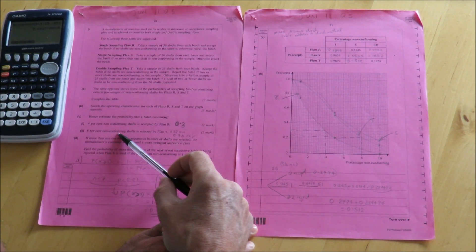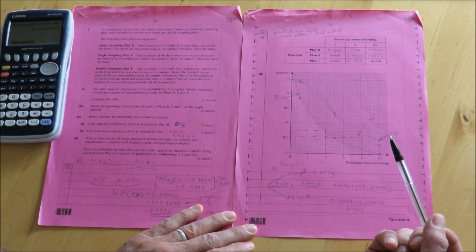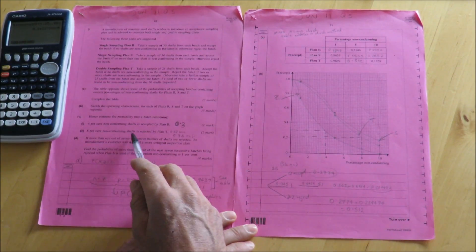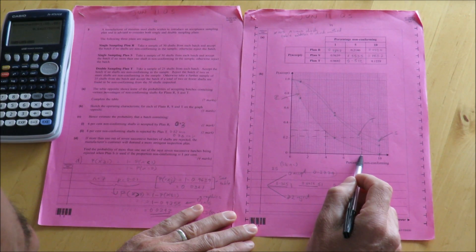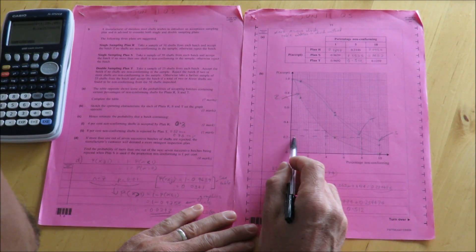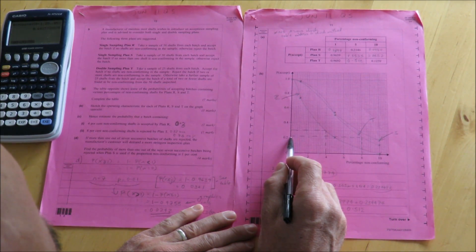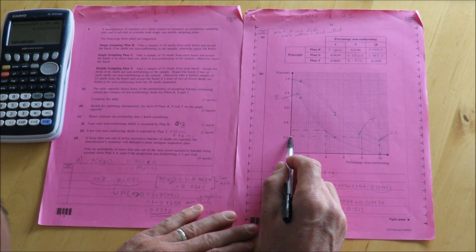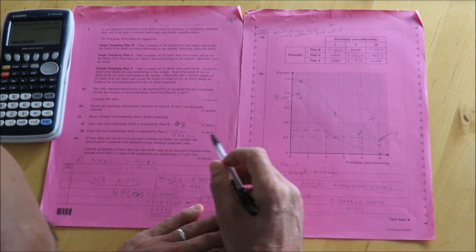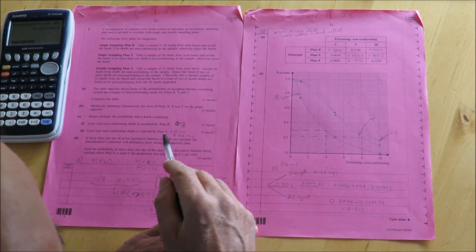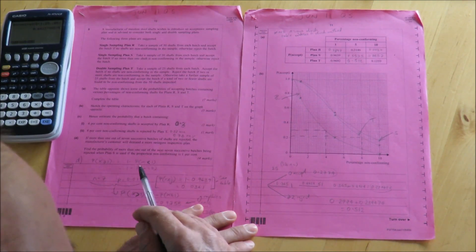The second one, 8% non-conforming shafts is rejected by Plan T. Now importantly here, this is rejected by Plan T. So what I'm going to do here is I go up from 8 and across to 0.22. Careful to read the scale here, because that's going up in increments of 0.02. But actually it asks me for the probability of rejection. So if there's a 0.22 chance of acceptance, the probability of rejection is 0.78.